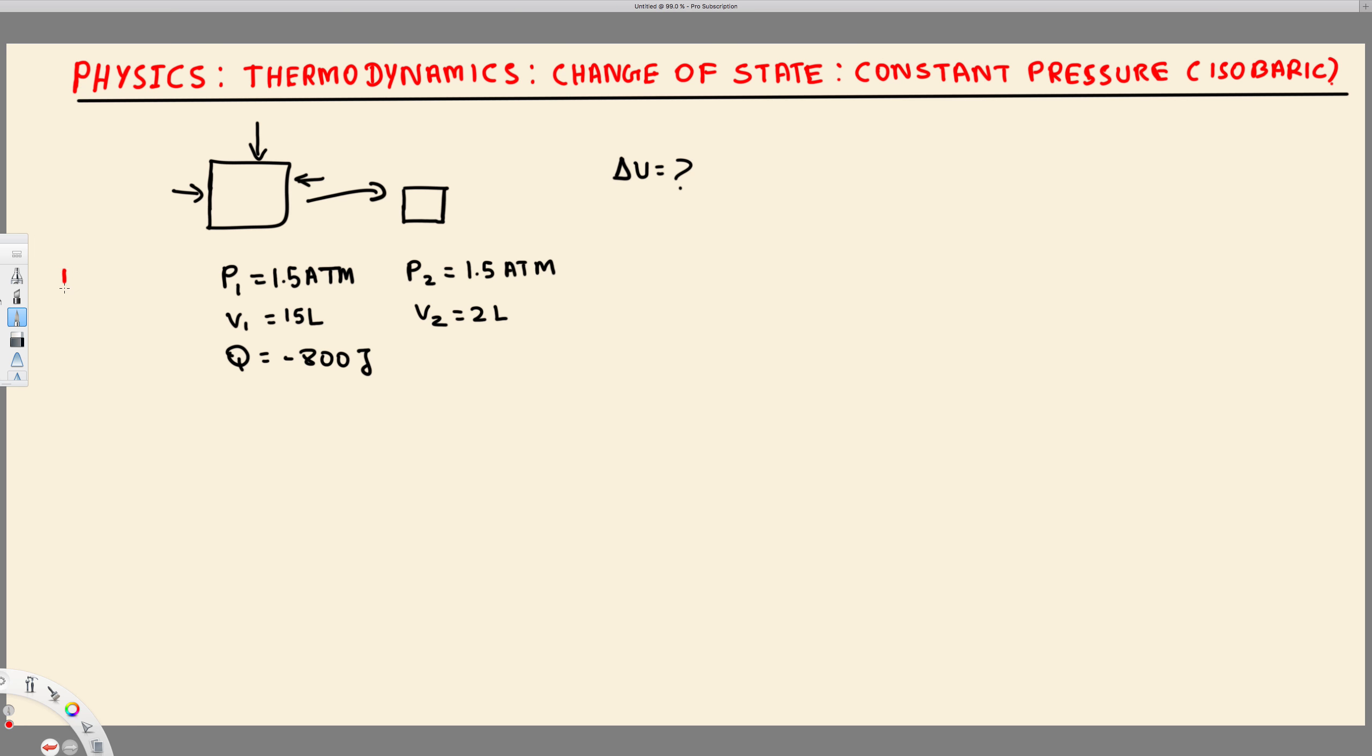If the pressure is constant, that's isobaric. V1 is given 15 liter, V2 is given 2 liter, and they are asking to find the delta U. So let's see how we can find it.